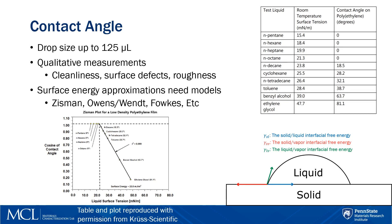For a more accurate surface energy value, we can plot the line corresponding to the surface tension of the liquid against the cosine of the contact angle. Then we can extrapolate the linear section of the plot to find the surface tension value where the cosine of the contact angle is equal to 1.